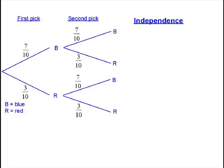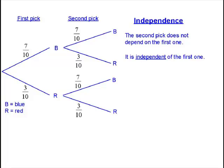This is an example of a very important idea in probability called independence. What it's saying is that the probability of the second pick doesn't depend on the first one. They're independent. The second pick is independent of the first one. So the probabilities for the second pick remain the same as for the first. In other words, what happened in the first round doesn't affect the second round.